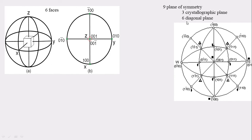And there are six diagonal planes. This is the first one, the second one, the third one, the fourth one, the fifth line, and the sixth line. All six are the diagonal planes of symmetry.